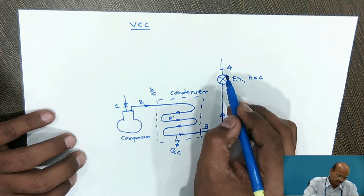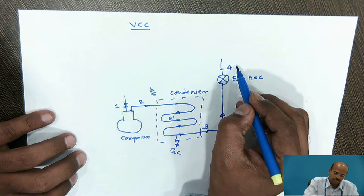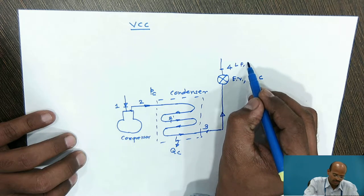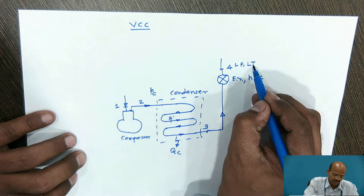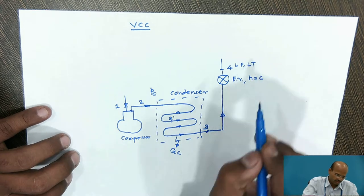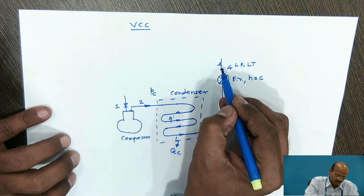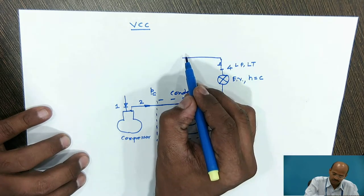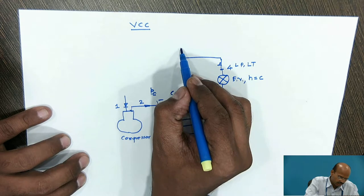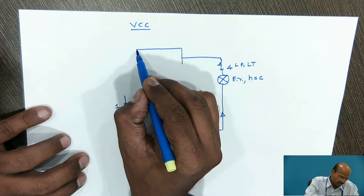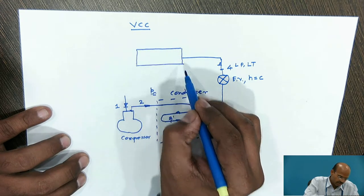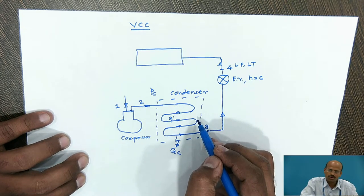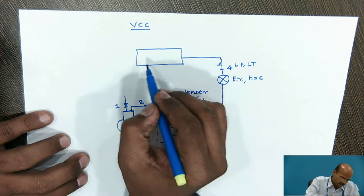This wet refrigerant possesses low pressure and, depending upon the design temperature, it will have a low temperature as well. We can then pass this low pressure, low temperature refrigerant through the evaporator. The types of evaporators are the same as those of the condenser, except for the flooded type or dry expansion type of evaporator.